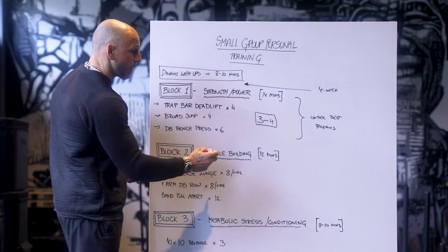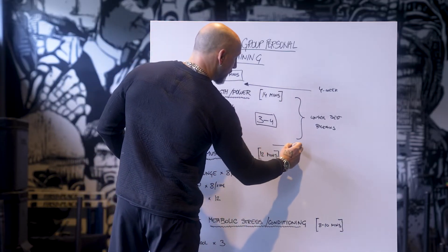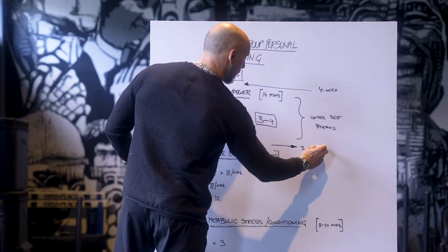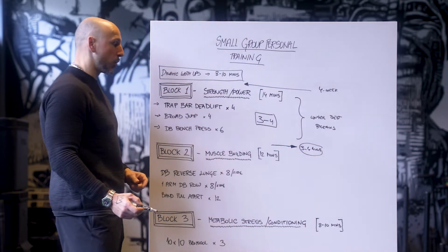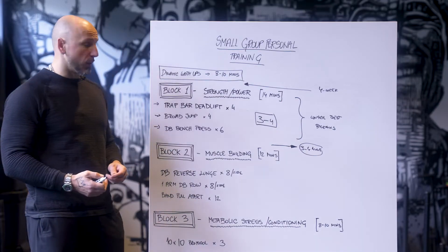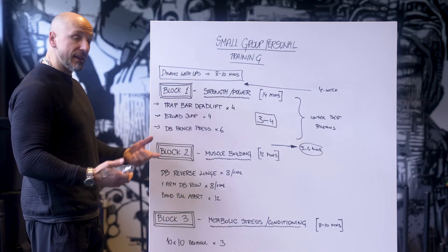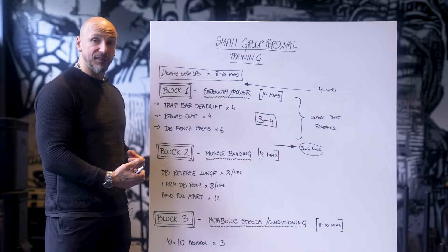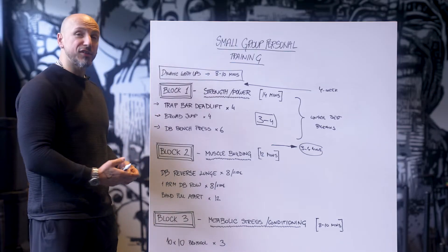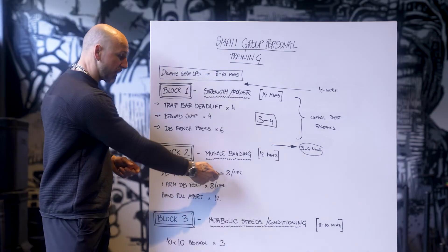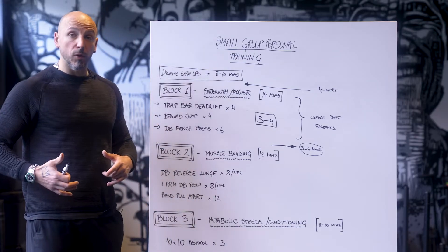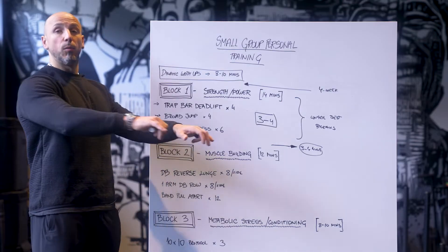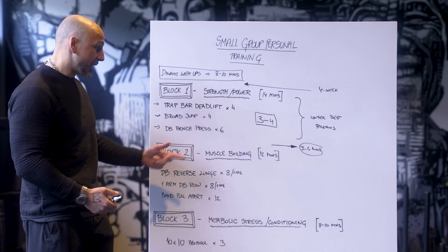After that, between block one and two, we have people put the weights away. We're probably going to have about three to four minutes. As you become more efficient, then we go into block two, which is the muscle building block. In this example, in a muscle building block, we push them to where they're going a little bit faster pace. It's almost like a strength circuit. We got dumbbell reverse lunge, one-arm dumbbell row, and band pull-aparts. This is an example of we want to do some more pulling than pushing. They got 12 minutes.